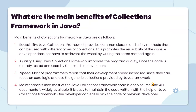What are the main benefits of the collections framework in Java? The main benefits are reusability — Java collection framework provides common classes and utility methods that can be used with different types of collections, promoting reusability of code. A developer does not have to reinvent the wheel by writing the same methods. Quality — using Java collections framework improves program quality since the code is already tested and used by thousands of developers.